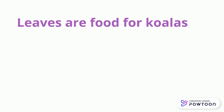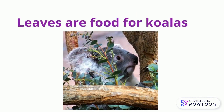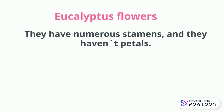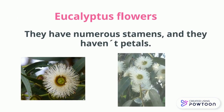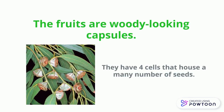Leaves are food for koalas. Eucalyptus flowers have numerous stems and they have no petals. The fruits are a woody looking capsule. They have four cells that house many seeds.